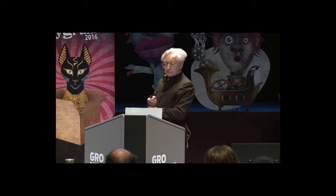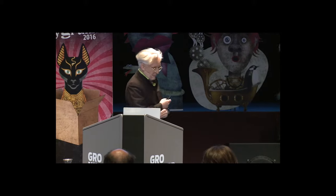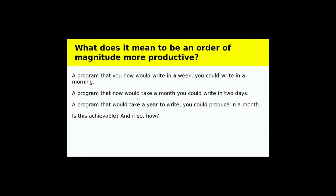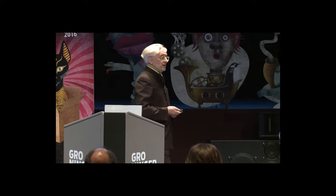Since the 1950s, computers have become roughly 11 trillion times faster — 11 million million, an American trillion. In that time, programmers have become maybe 10, or if you're very lucky, 100 times more productive. This difference is absolutely enormous. An order of magnitude improvement means a program you could write in a week you can now write in a morning, or one that would take a year you could do in a month. Clearly, an order of magnitude improvement is something to strive for.